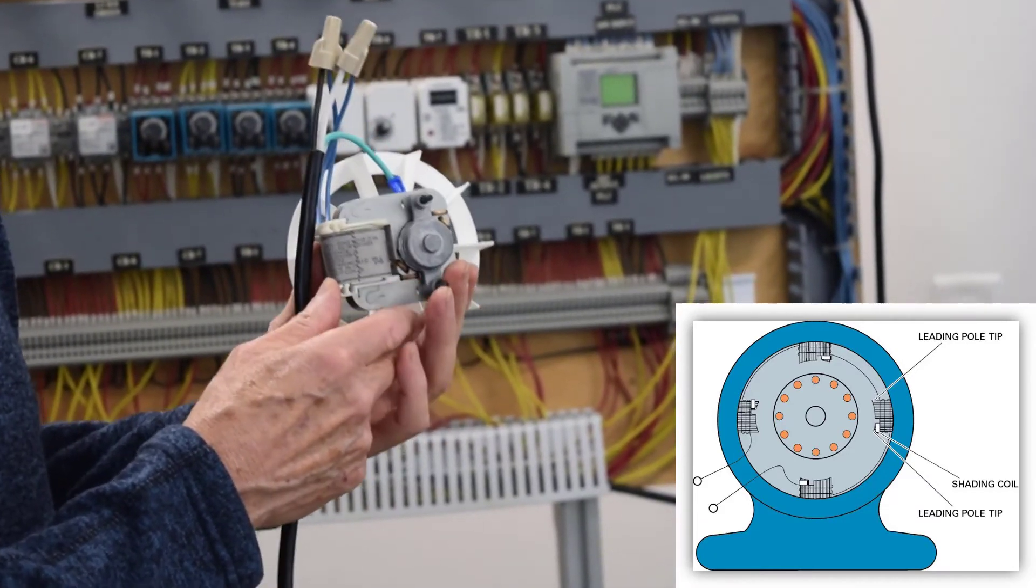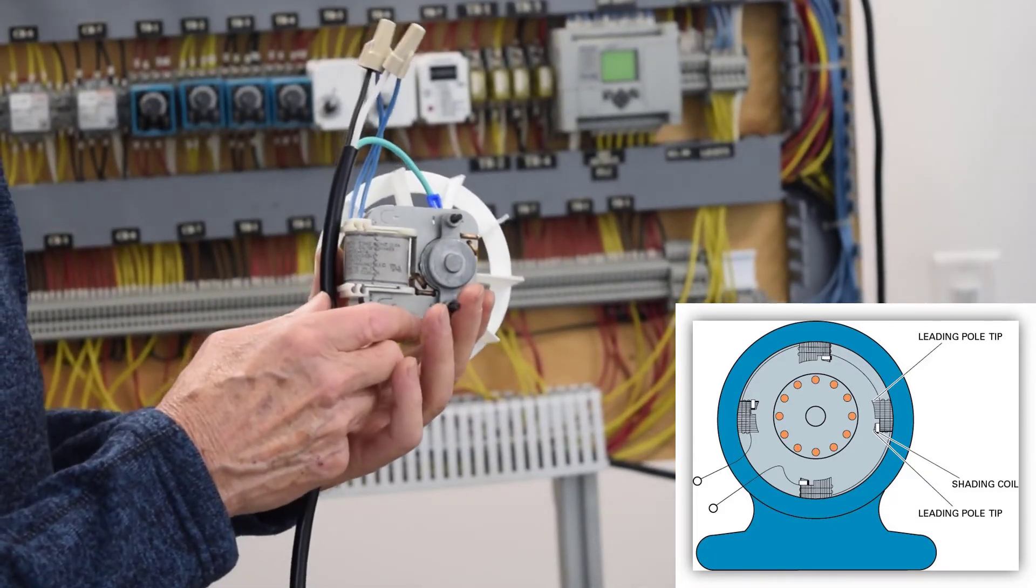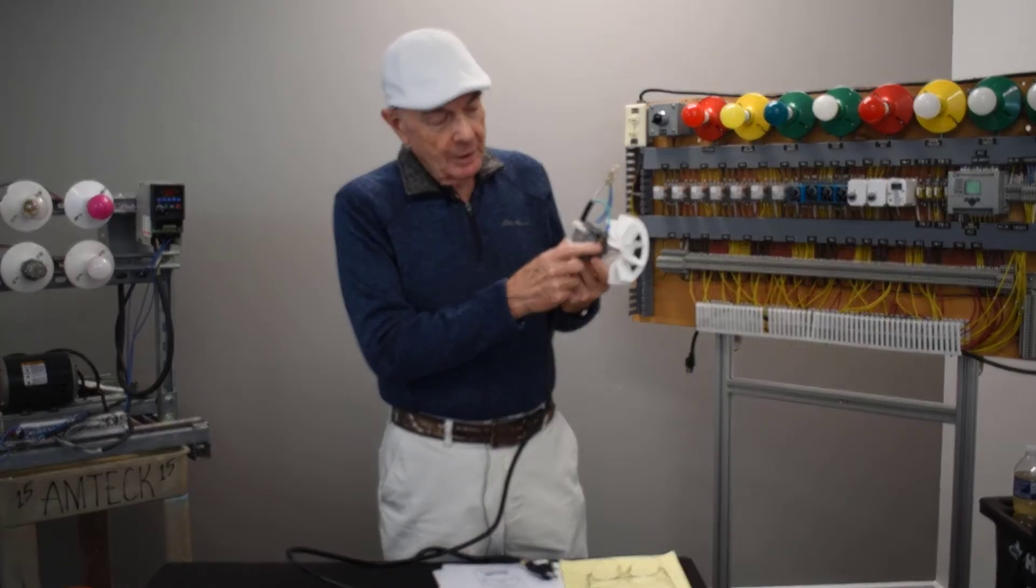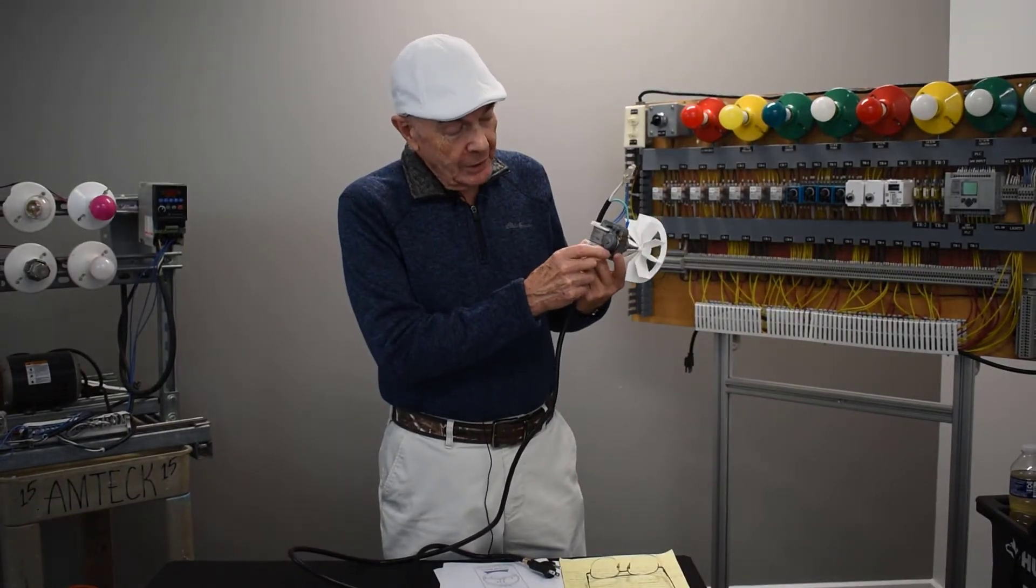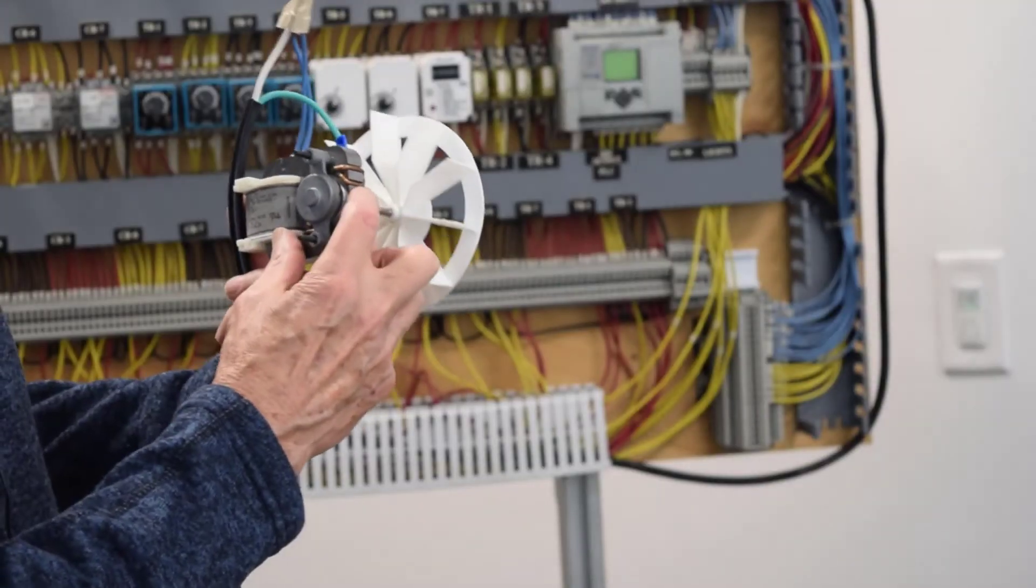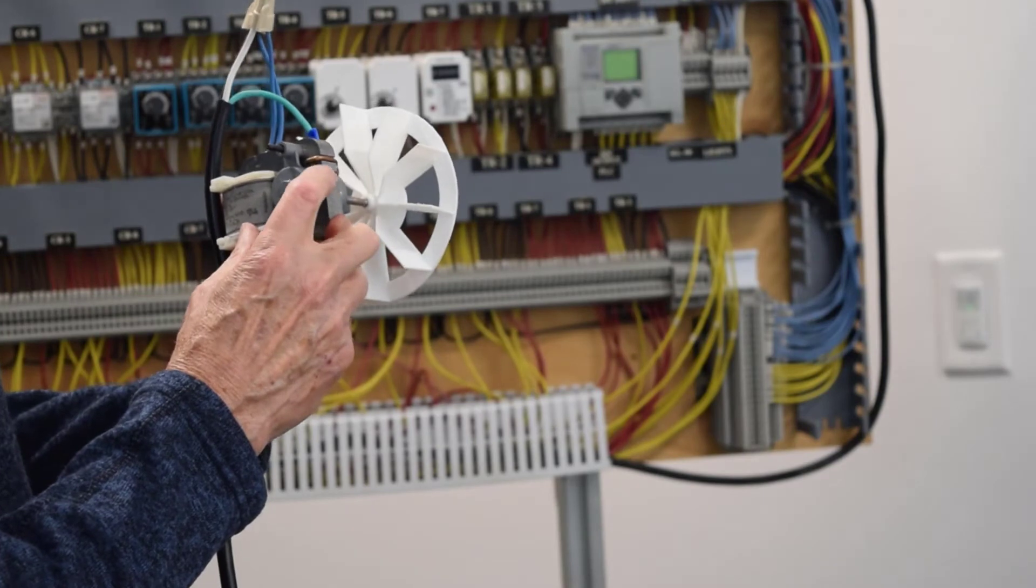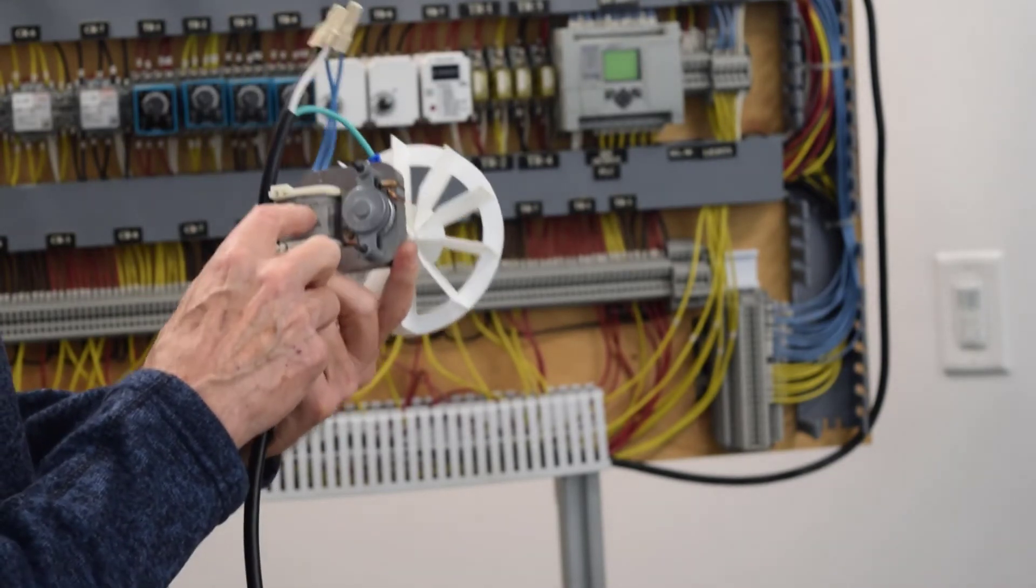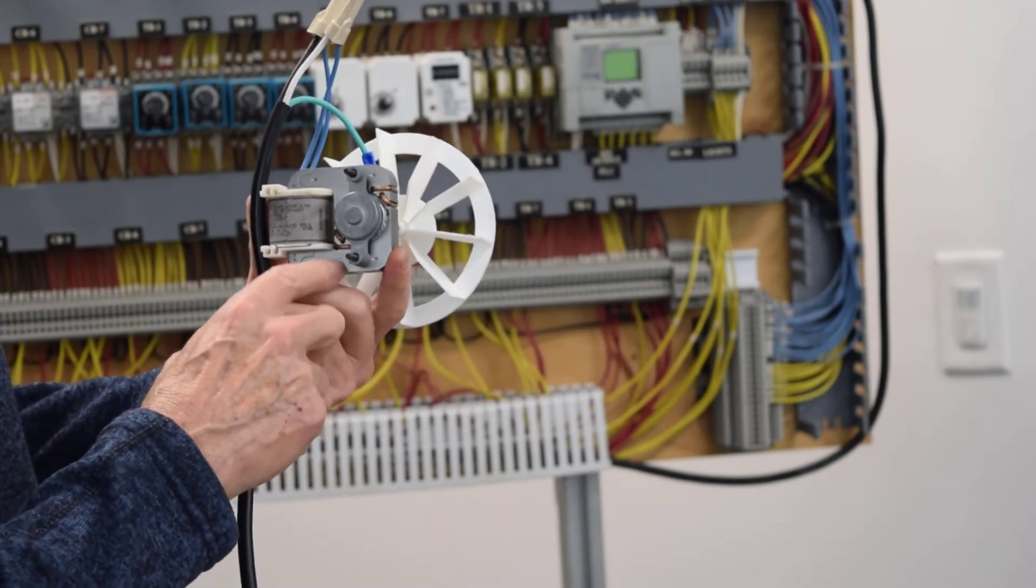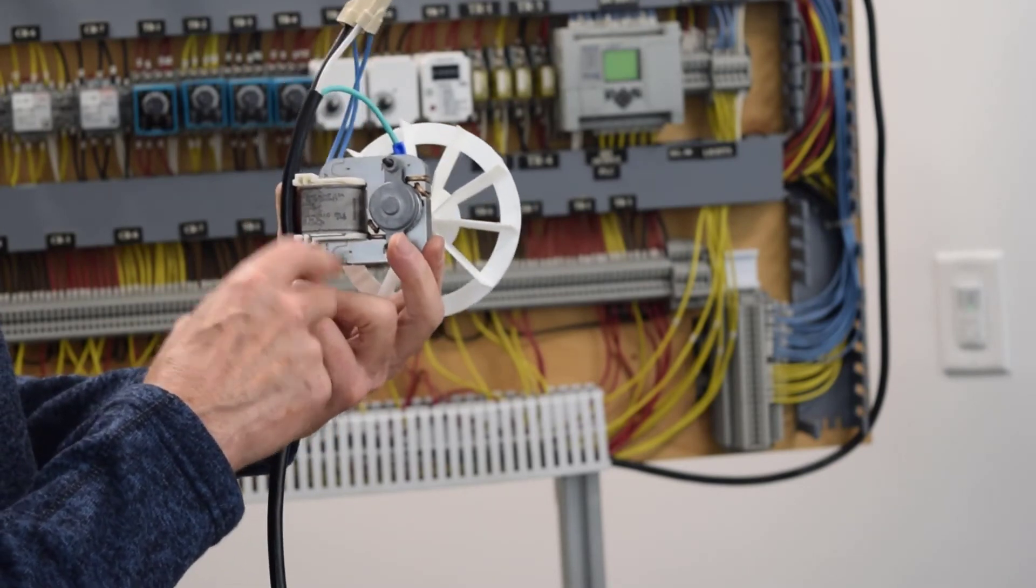Now to get this thing started, we got to have another interaction with that first field. Basically what they've done is they have shorted part of this out. When this current comes through here, the current in this right here is going at one speed.